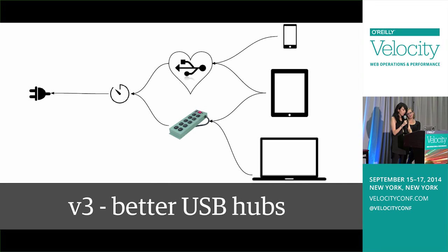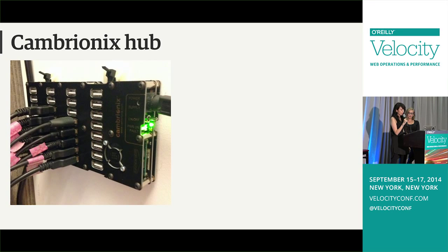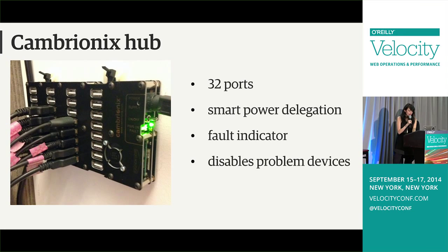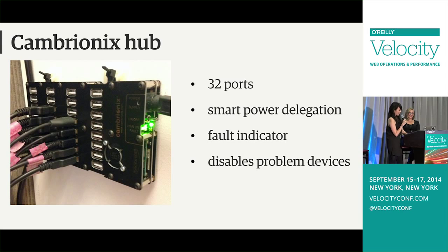Version three: better self-powered USB hubs. We ended up going with a hub made by Cambrianix. It's ideal for lower-power devices, which are most of the devices we have in the lab, but not suitable for larger power-hungry devices like iPads or other tablets. This hub was awesome — it can handle up to 32 devices, and every port is powered to the maximum of the USB standard. There's a safety precaution device within the circuit board that prevents a higher charge from going to each port, and a fault indicator light that helps identify problematic devices, disabling only the faulty device while leaving the rest still charging.